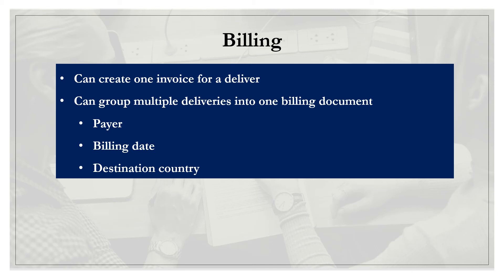When the invoice is finally created by the accounting department — and we'll talk more about invoice and financials once we get to the accounting side — just know that when the accounting department creates an invoice for the customer, they can create one invoice per delivery, or they can also group multiple deliveries into one billing document or one invoice. For one invoice to cover multiple deliveries, the payer has to be the same, billing date has to be the same, and destination country has to be the same. With the SAP system, it can create invoices online or automatically in the background during off-peak hours.